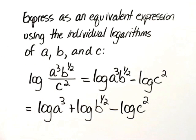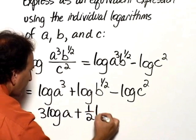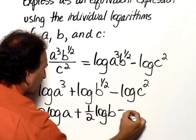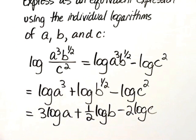Now we'll apply the power rule for each of these expressions. So this would become 3 log of A plus one-half log of B minus 2 log of C. And that would be the equivalent expression using the individual logarithms of A, B, and C.